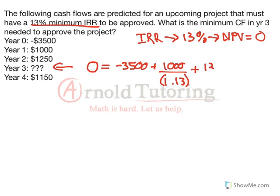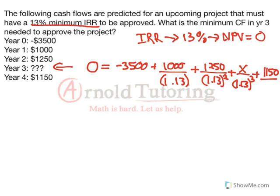Plus 1,250 — that has to come back 2 years, so divided by 1.13 to the power of 2. Plus our third year cash flow, we'll call it x because we don't know what that is, but whatever it is it'll be discounted back 3 years. Plus 1,150 discounted back 4 years.